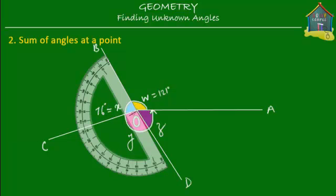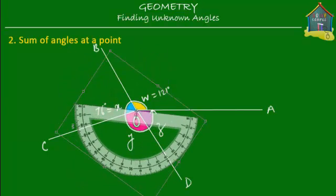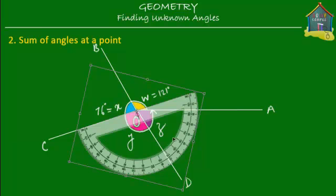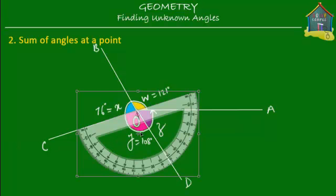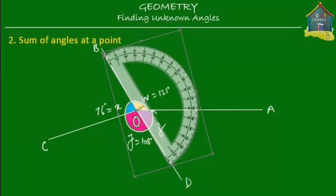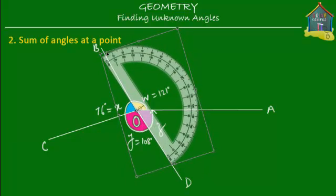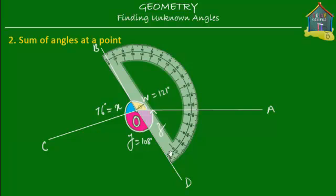How about Y? Take the protractor one more time, rotate it, place it on OC, and see the angle it makes with OD. This time it is 108 degrees, so Y equals 108 degrees. Finally we have Z. Take the protractor, rotate it, place it on OD, and measure the angle it makes with OA. That's 55 degrees, so Z equals 55 degrees.